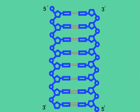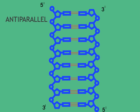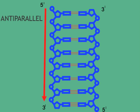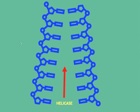When DNA assembles into its double helix, one long polynucleotide chain bonds to another long polynucleotide chain, held together in the middle by hydrogen bonds between the nitrogenous bases. In the case of adenine and thymine there are two hydrogen bonds, and in the case of cytosine and guanine there are three hydrogen bonds. DNA coils into the form of the classic double helix, with two polynucleotide chains running in opposite directions, or anti-parallel. Pause and explain the meaning of the terms 5' to 3' and anti-parallel.